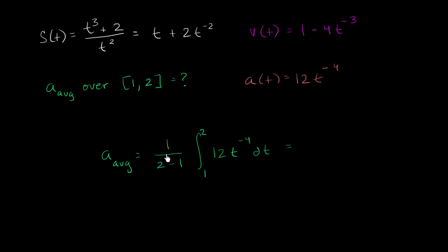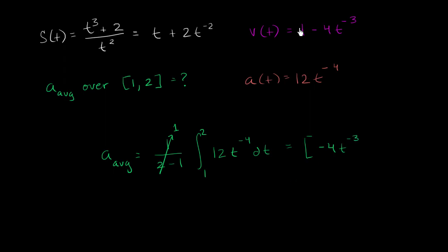So what does this simplify to? Since 1 over 1 is just 1, we need the anti-derivative of 12t to the negative 4. We increment the exponent to negative 3 and divide by negative 3, giving us 12 divided by negative 3, which is negative 4. So an anti-derivative is negative 4t to the negative 3 power. For a definite integral, any constant would cancel out, so we proceed with negative 4t to the negative 3.